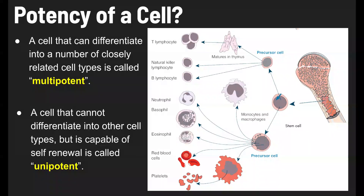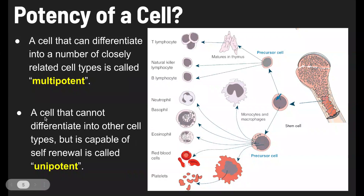Beyond that point, as those cells continue to divide, you'll produce multipotent cells. For example, inside the bone marrow you have stem cells, but these are multipotent — they can differentiate into a number of closely related cell types, specifically cells related to bone and blood. And then a cell that can't differentiate into other cell types but is capable of self-renewing — making more of itself — is called unipotent. For example, a red blood cell is unipotent: it can only produce more red blood cells and is not going to produce, say, lymphocytes.